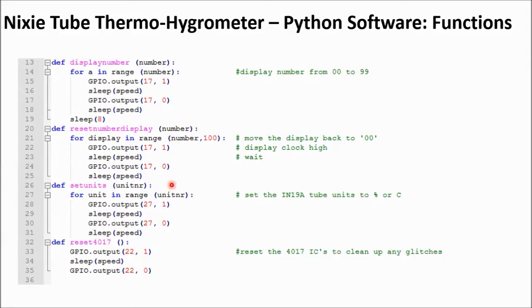Then the next one is the same, but it has only a single tube. It's the IN19A tube, so this one will count until unit number. So here you can set, it will count for instance until 4 if degrees centigrade is at 4 of this tube. And it will count to 7 if the percentage is at 7. So this way you can set the unit. Then here you have reset 4017. That's a very simple function. It will just make the GPIO22 high for a short period to reset the 4017.